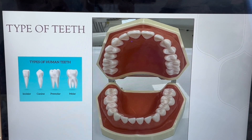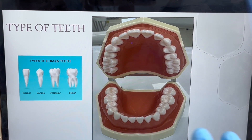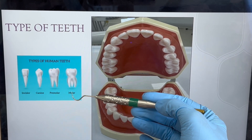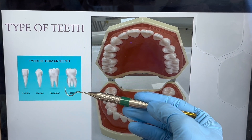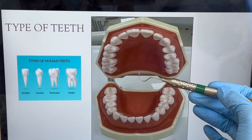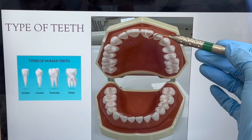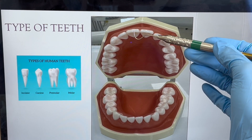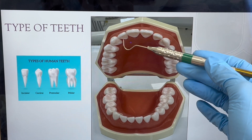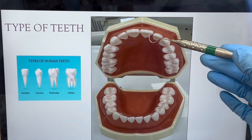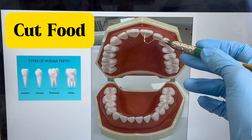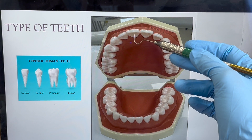Next, we identify the type of teeth. As humans, we have four types: incisors, canines, premolars, and molars. These two teeth right in the midline we call central incisors — central because they are in the center. Incisors have an edge like a knife, so similar to a knife, their use is to cut food. These two are the central incisors because they are right in the center.